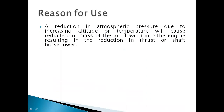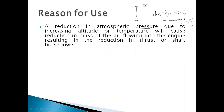Let us understand why we require an afterburner or water injection. When an aeroplane takes off and reaches a higher altitude, atmospheric pressure keeps decreasing. If atmospheric pressure decreases, the density of the air also decreases. If density decreases, mass of the air decreases, and if mass decreases, thrust decreases. This leads to a reduction in thrust, and to recover that thrust we use the afterburner or the water injection method.